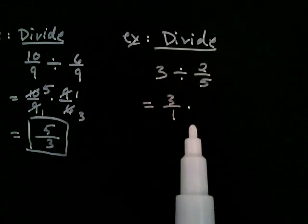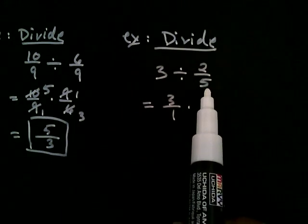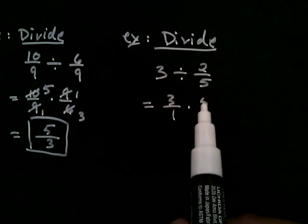Division gets changed to multiplication. And now the important part, you take the reciprocal of the second fraction. So the reciprocal of two over five is five over two.